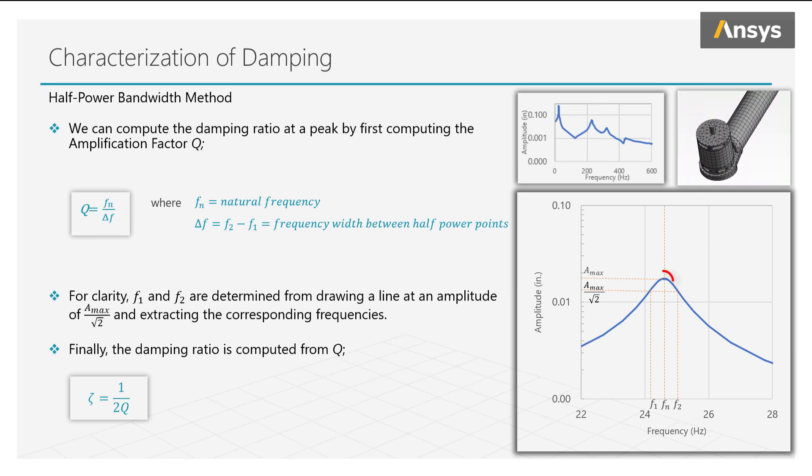To compute Q in this equation, we extract the natural frequency F sub n, which is the frequency where the curve has maximum amplitude A max. Then we compute the value of the amplitude that is A max over the square root of 2. At this amplitude, we will find there are two intersections with the curve, and we can extract these two respective frequencies F sub 1 and F sub 2.